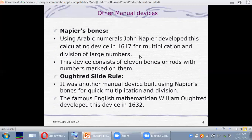Just like Nepeir Boons and Outreach Slide Rule. In 1617, a mathematician John Nepeir invented another manual device for calculation of multiplication and division of large numbers. This device consists of 11 rods with numbers marked on them. By the way, can you search on Google and tell me what else John Nepeir is famous for? Give me the answer in the comment section.